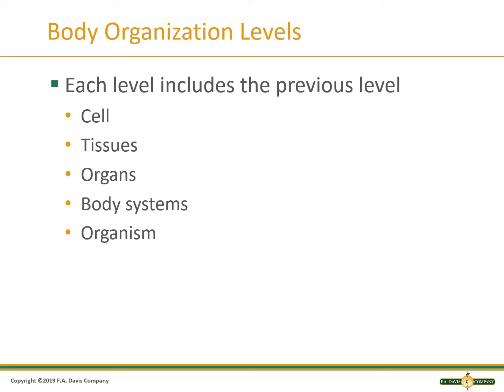The body has organizational levels. Starting from the smallest to the largest, they are: cells, tissues, organs, body systems, and organism. Each level includes the previous level within it. Cells are part of tissues, tissues are part of organs, organs are part of body systems, and body systems are part of an organism.